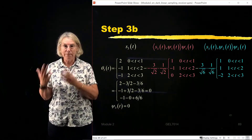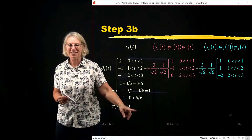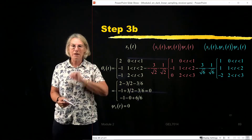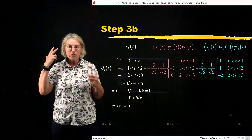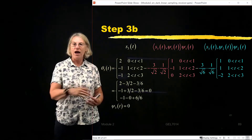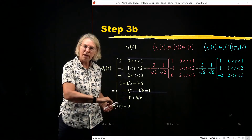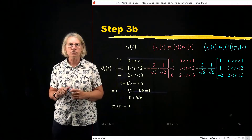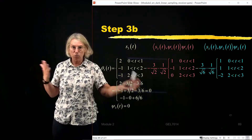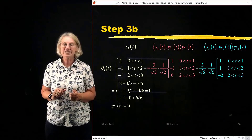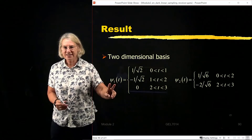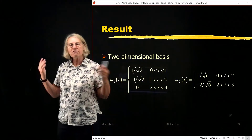Because one step in the Gram-Schmidt process gave us a zero, the signal space is two-dimensional instead of three-dimensional. We started with three symbols — the space could have been as large as dimension 3 — but since S3 is a linear combination of the previous symbols, the dimension stops at 2. We end up with a two-dimensional signal space and two basis vectors found by the Gram-Schmidt process.